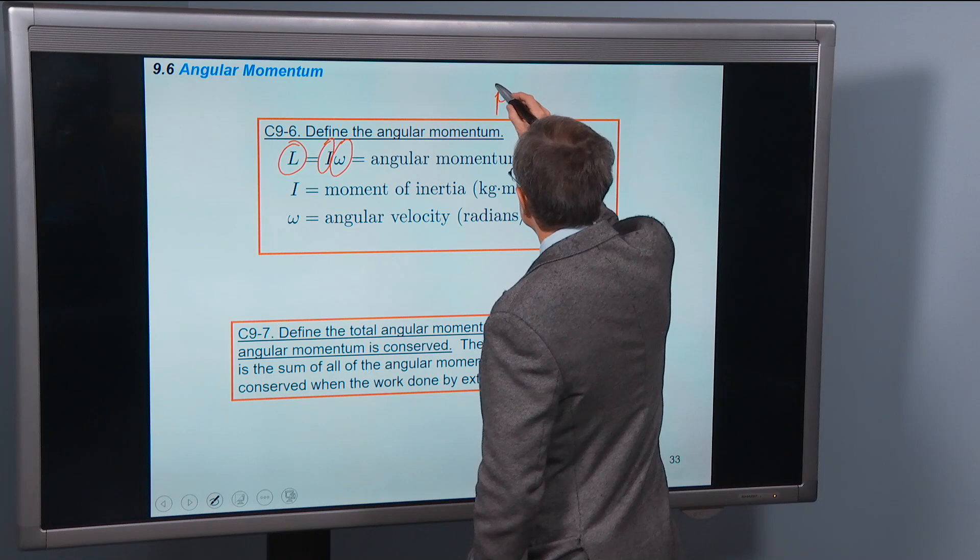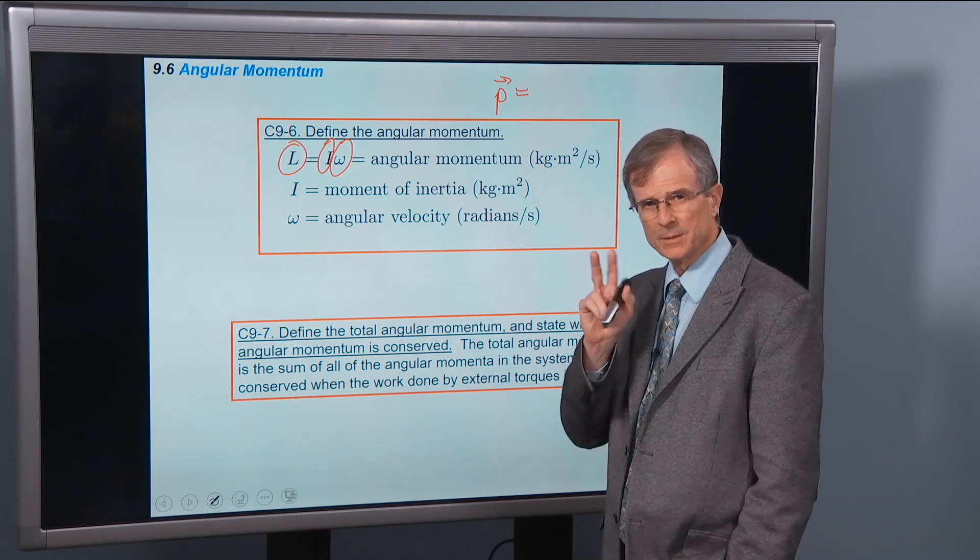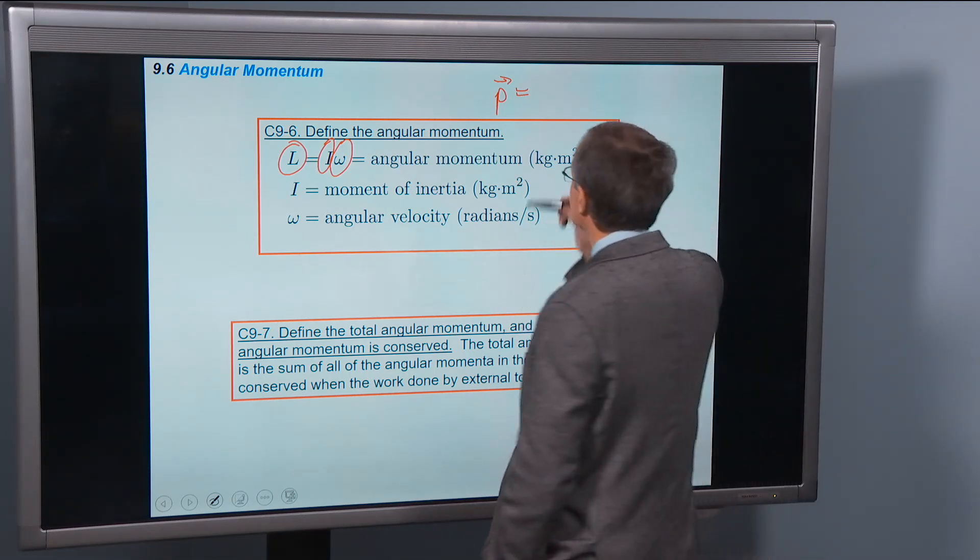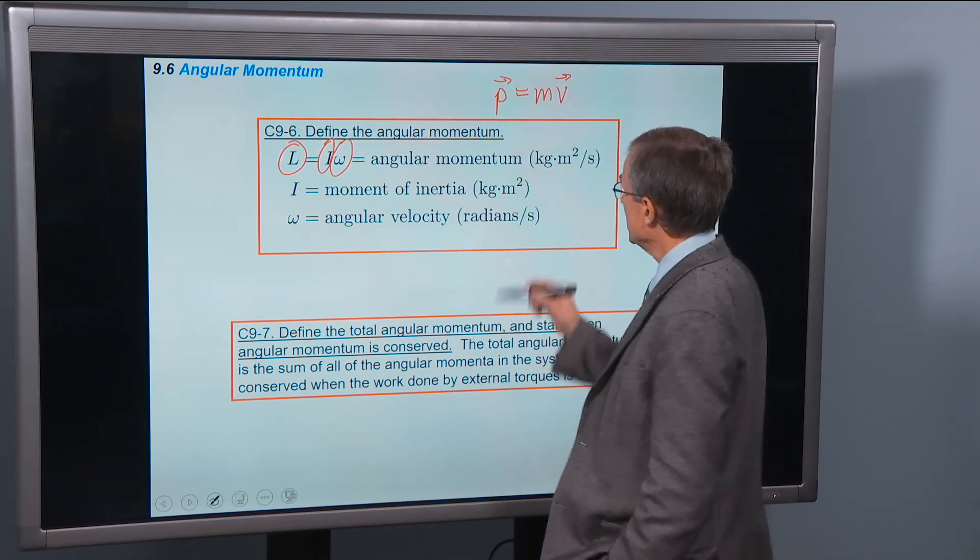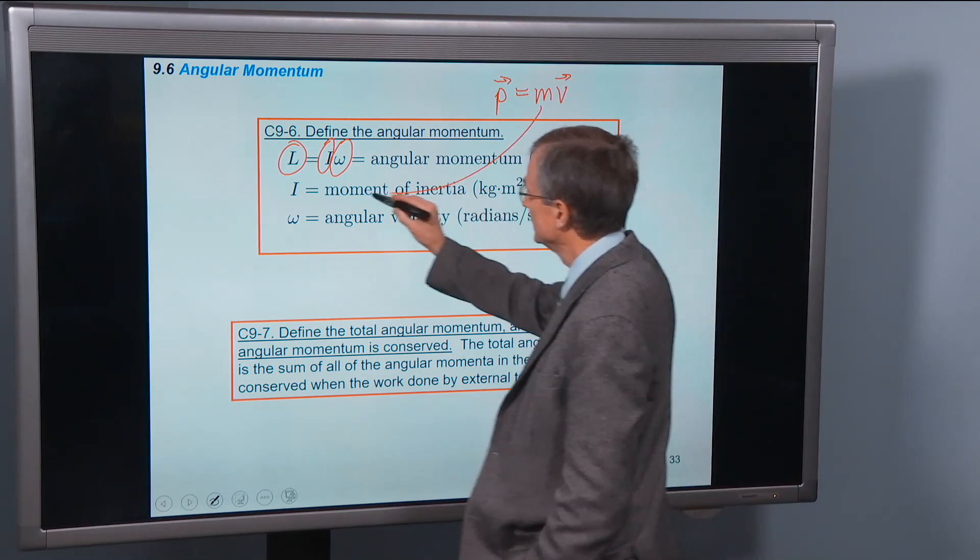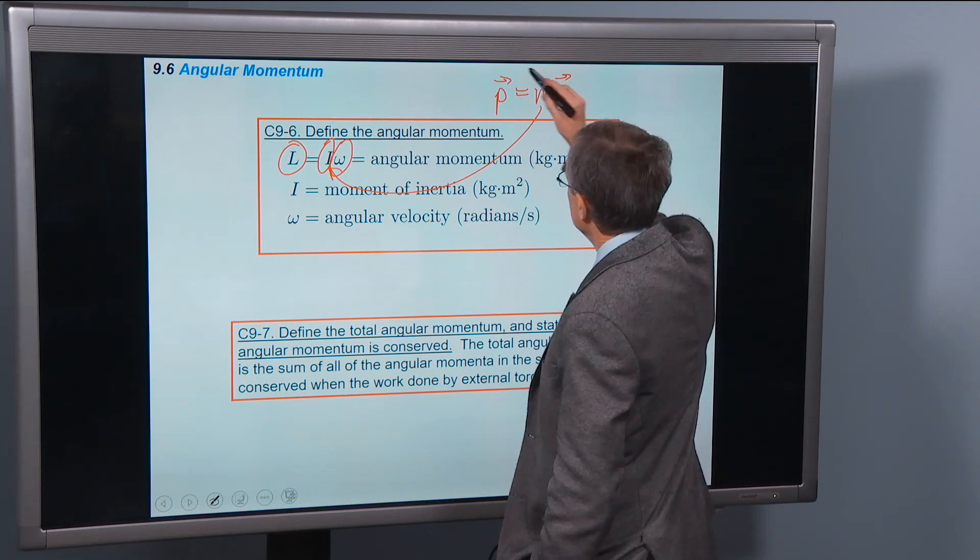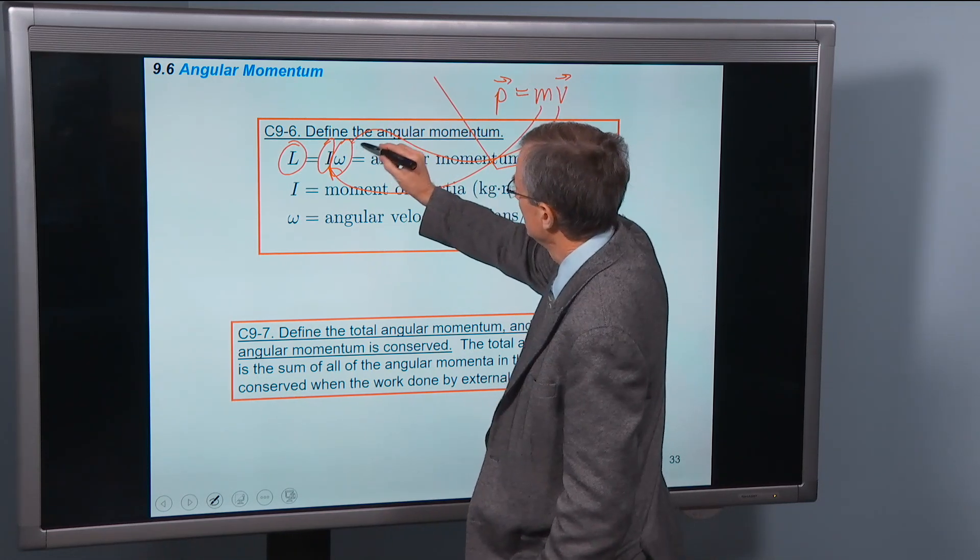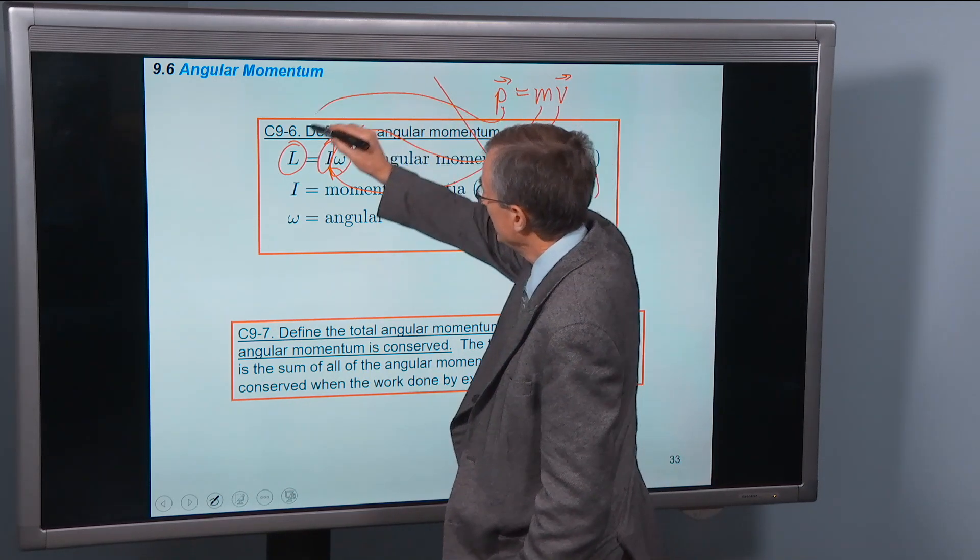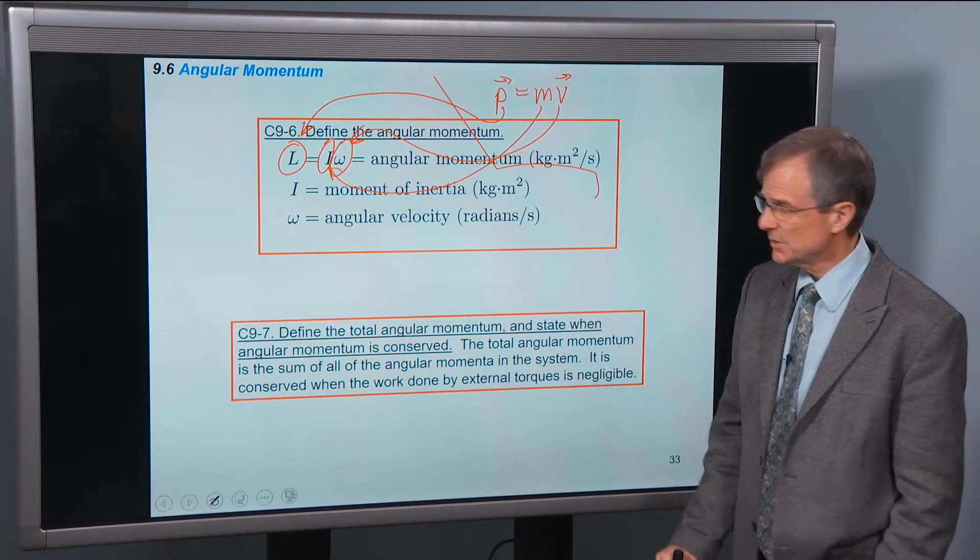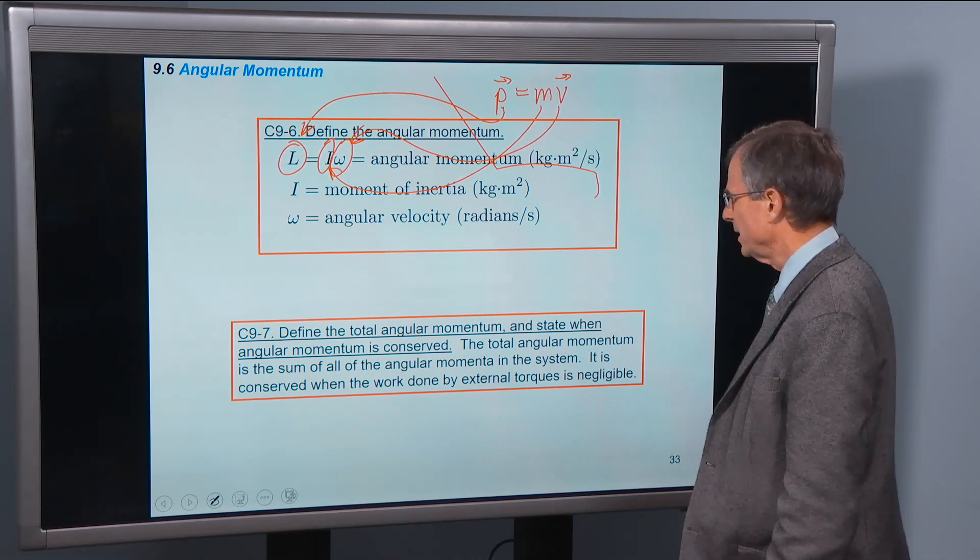Do you remember the linear momentum? It's the product of two things. What are they? You're right, mass and velocity. Well, what's the angular equivalent of mass? Moment of inertia. The angular equivalent of velocity? Angular velocity. The angular equivalent of linear momentum is angular momentum. It's right straight across.